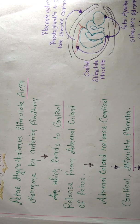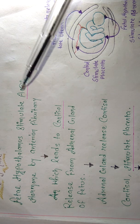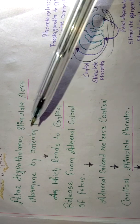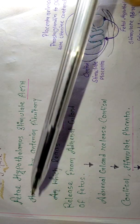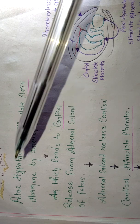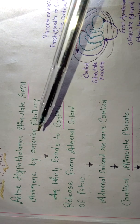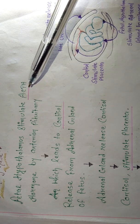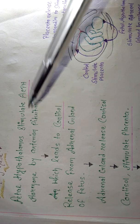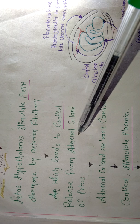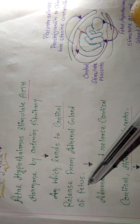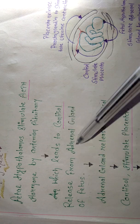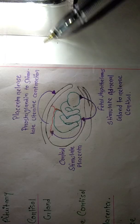In the latent phase, the fetal hypothalamus stimulates the anterior pituitary to release ACTH — adrenocorticotropic hormone. ACTH then travels to the adrenal gland of the fetus, located near the fetal kidney. The adrenal gland responds by releasing cortisol.